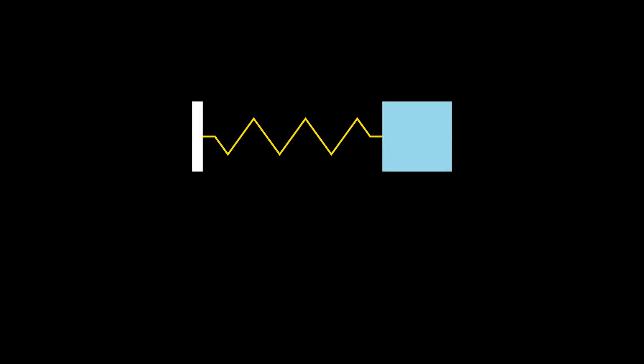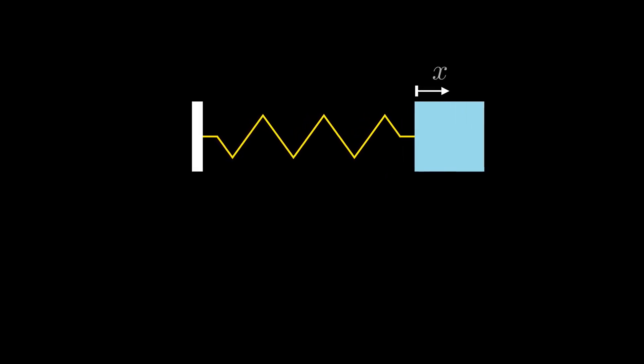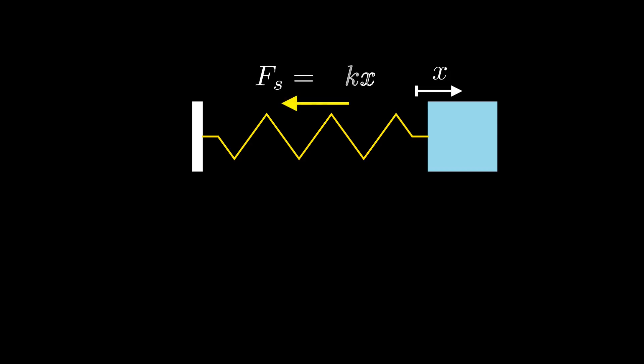Consider this spring mass system. We don't apply any external force and there is no energy loss and friction of any kind. If we move the mass by a distance x, the spring applies a force on it which is equal to the stiffness k times the distance x, and it is opposite in direction to the displacement, therefore it has a negative sign. According to Newton's second law of motion, the force should be equal to the mass times the acceleration. This gives us the governing equation of our spring mass system.